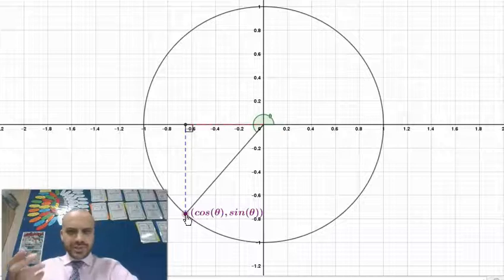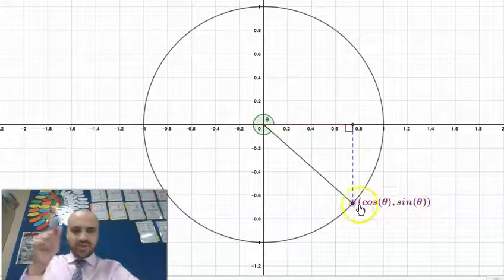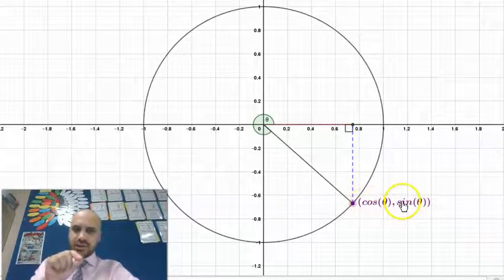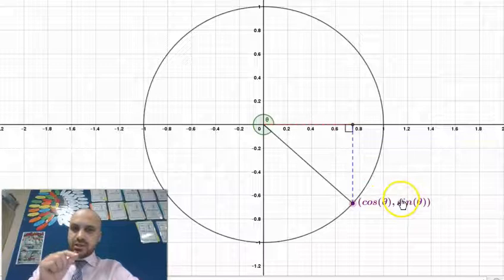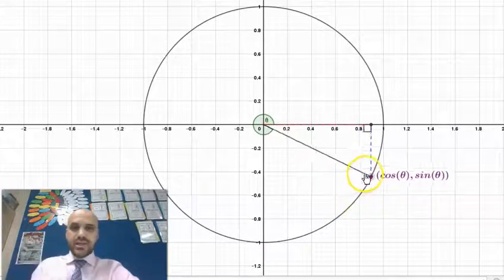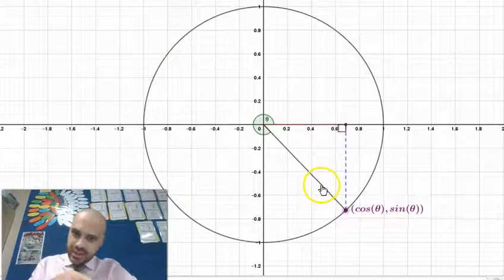And when we move into quadrant 4, sine theta divided by cos theta, in this instance, sine theta is going to be negative, so tan theta is also going to be negative. So tan theta is going to be positive in here, negative in here, positive in here, and negative in here.